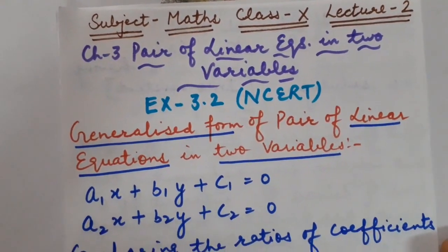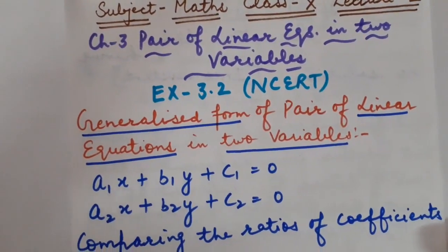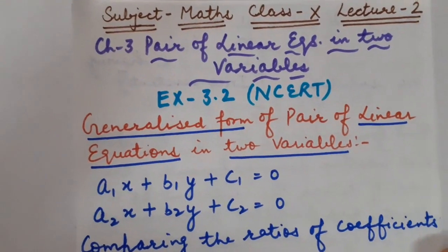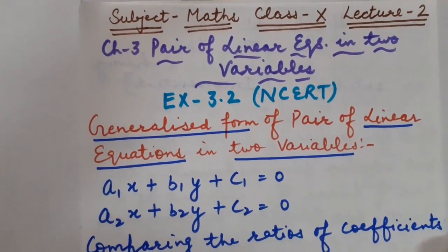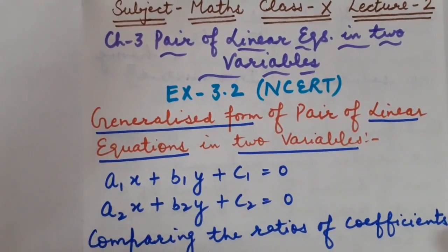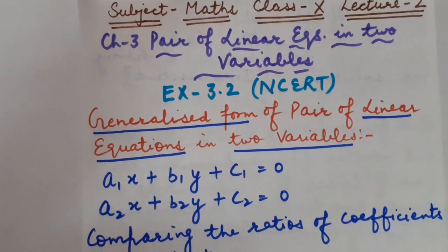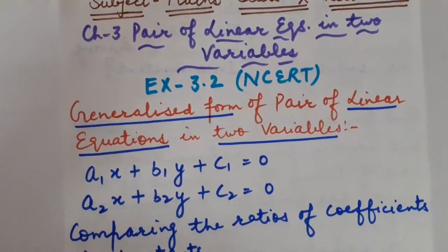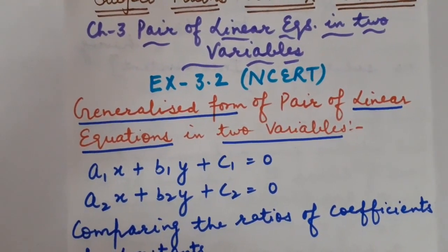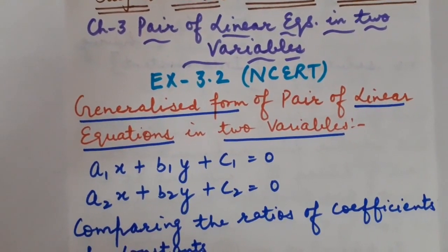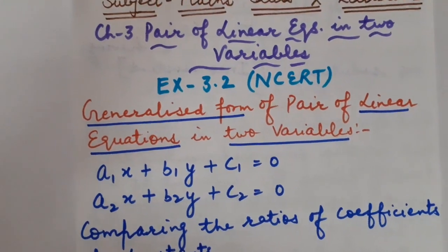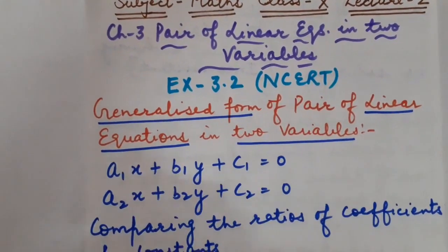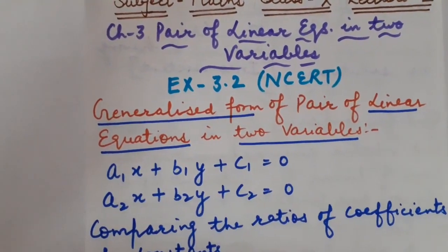In my previous lecture, children, I made you understand how to represent a pair of linear equations in 2 variables. There is one more kind of representation. Before we switch to that, let us recall the previous concept once.